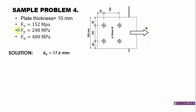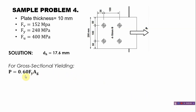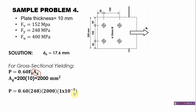For the first mode of failure — gross sectional yielding — the formula is 0.60 × F_y × A_g. The gross area A_g = 200 × 10 = 2,000 mm². Substituting: P = 0.60 × 248 × 2,000 × 10⁻³ = 297.60 kN.